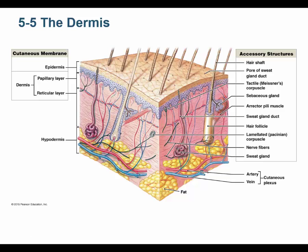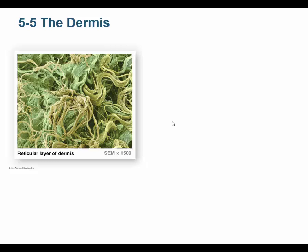Many accessory glands and organs are found in the dermis. The sudoriferous gland — another word for sweat gland — is in the dermis. The hair follicle is in the dermis; think of it as the epidermis being pushed down into the dermis. The arrector pili muscle, a smooth muscle attached to the hair, is in the dermis. The sebaceous gland, which secretes the oily substance called sebum, is also in the dermis.